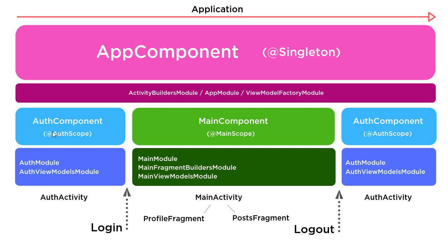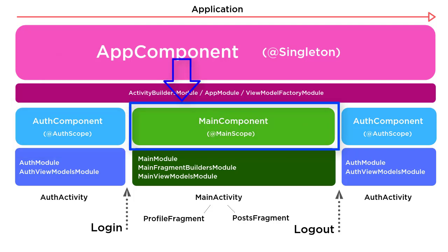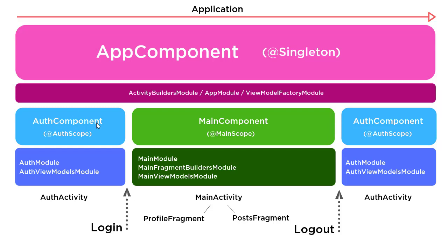The Auth Component has a shorter lifespan, and the same with the Main Component. The thing to notice about these two is that they're on the same level. The way I want you to think of it is: if Auth Component, then not Main Component; and if Main Component, then not Auth Component. So it's either one or the other — only one will be active at any given time. The App Component is kind of like the parent, the top one, and then these two are known as subcomponents.